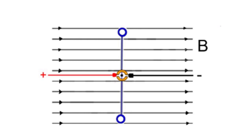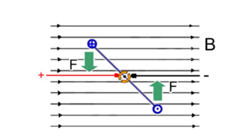The side of the split ring that was in contact with the positive brush is now in contact with the negative brush, and vice versa, so the current direction in the loop is opposite to the initial current direction.